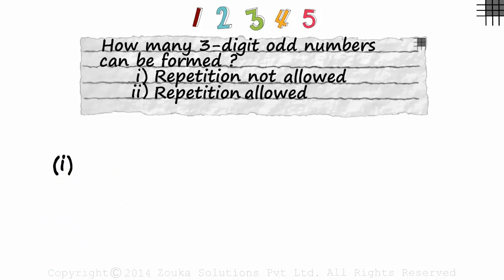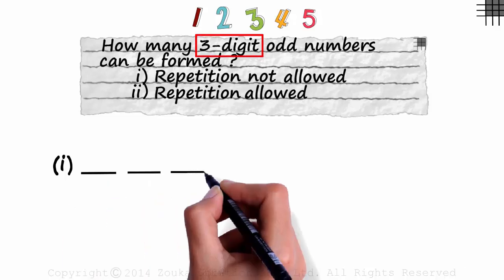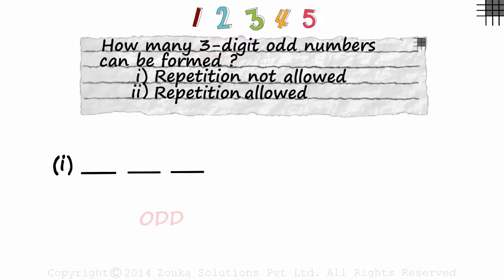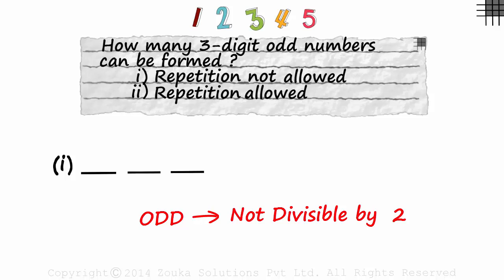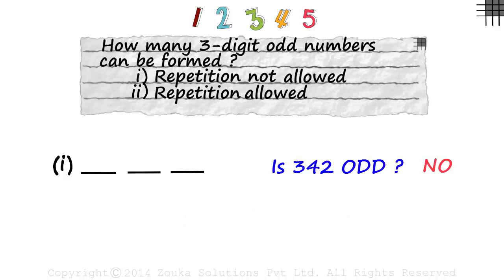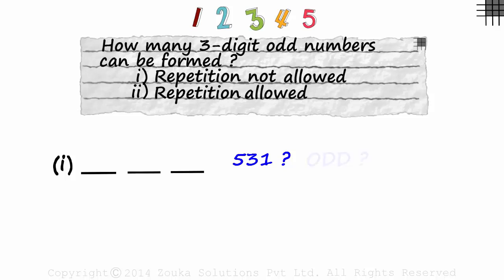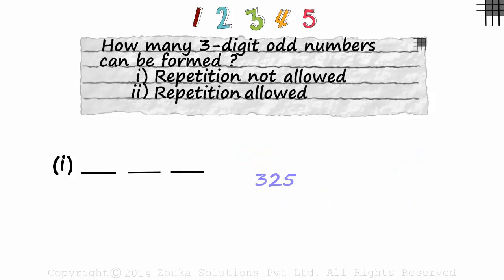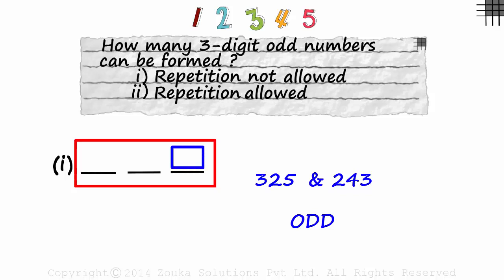Let's understand the first part. Read the question well — how many three-digit odd numbers? Odd is the key word here. As we have been asked for three-digit numbers, let's make three slots. A number is odd if it is not divisible by 2. For example, 342 is not odd as it is divisible by 2, but 531 is odd because it is not divisible by 2. Similarly, 325 and 243 are odd. In simple words, this three-digit number will be odd if its unit digit is odd.